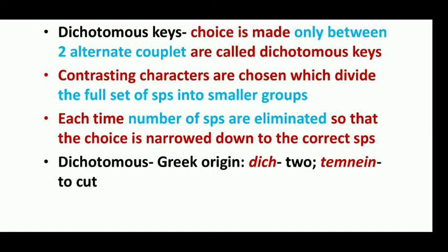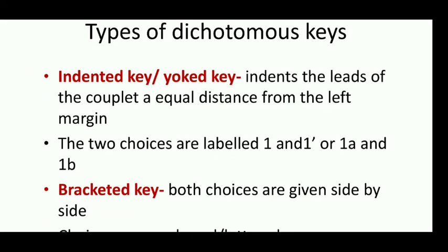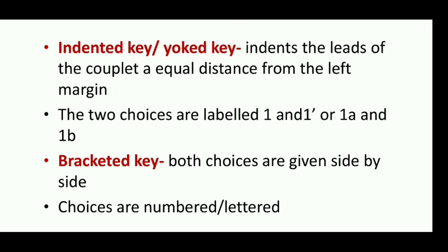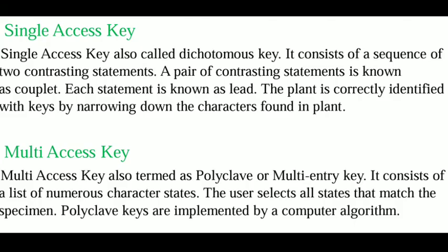Dichotomous is of Greek origin: 'dicho' meaning 'two' and 'temnein' meaning 'to cut,' so you can divide the characters into two groups. There are two types of dichotomous keys: one is indented or yoked, and the other is bracketed. In the indented key, the leads of a couplet are indented equal distance from the left margin, and the two choices are labeled as 1 and 1' or 1a and 1b. In the bracketed key, both choices are given side by side and choices are numbered or lettered.